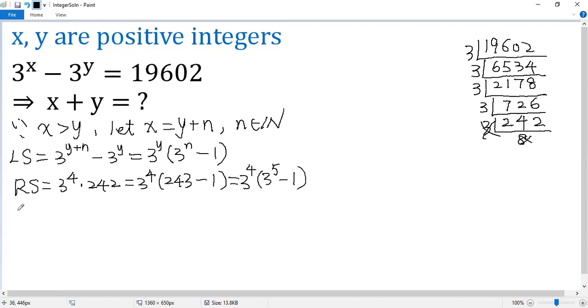So we get one solution. Y equals 4, n equals 5. So our target x plus y equals y plus n plus y equals 4 plus 5 plus 4, so equals 13. That's one solution.